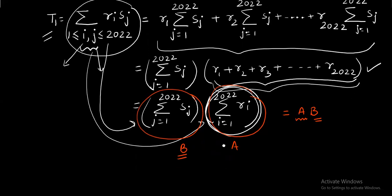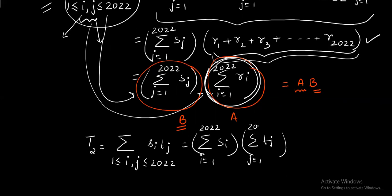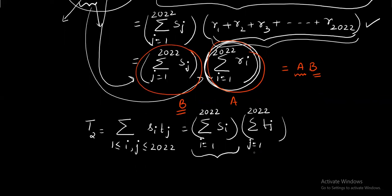Now you proceed with T_2 in the similar way. When you proceed with T_2 which is sigma of s_i times t_j where both i and j move from 1 to 2022, you will notice that it converts to sigma s_i times sigma t_j. Again you can notice that both of them are representing sum of the roots, this one for the second equation and this one for the third equation. I'm writing this one as B and this one as C. So the second term has converted to product BC.